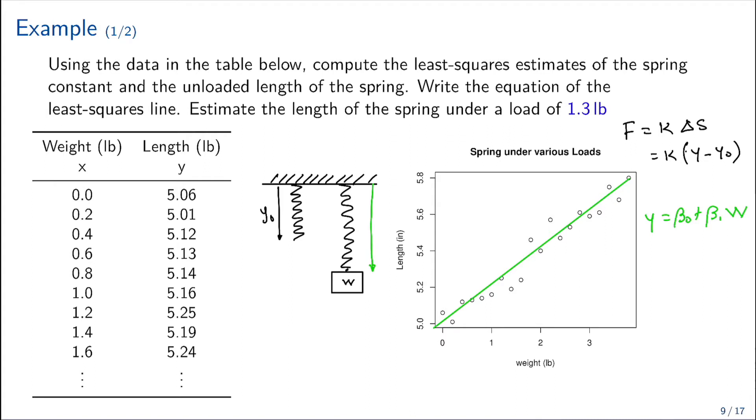In this case, beta0 represents the unloaded length of the spring and beta1 represents the inverse of k. So k equals 1 over beta0.